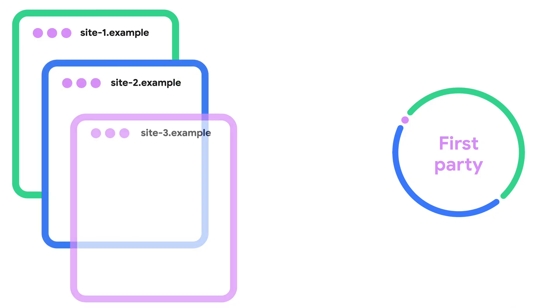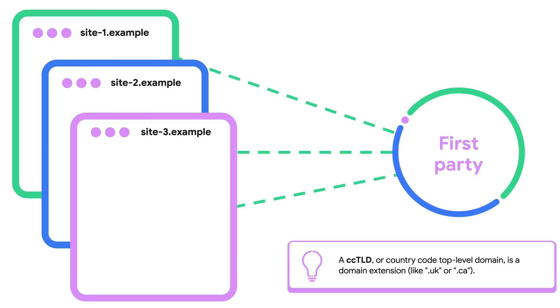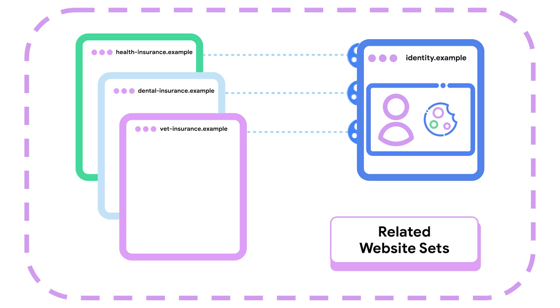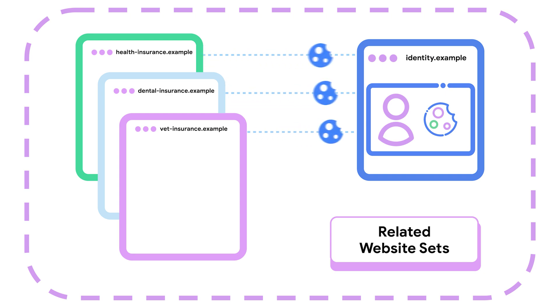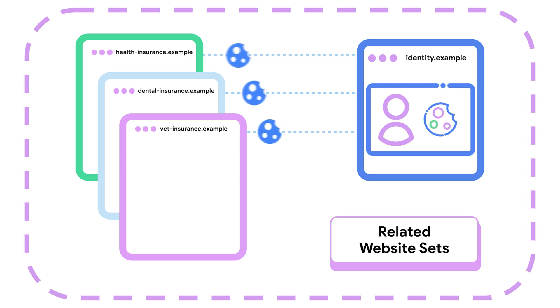Another API you can use to support your identity flows is Related Website Sets, or RWS. With RWS, you can declare relationships among related sites, including up to five associated domains and as many ccTLDs and service domains as you like. This looks like a perfect solution for our example with multiple related insurance services relying on the same in-house identity solution. Within a related website set, browsers that support RWS will allow limited third-party cookie access. So RWS can enable single sign-on and other user journeys that rely on third-party cookies across a small number of domains.